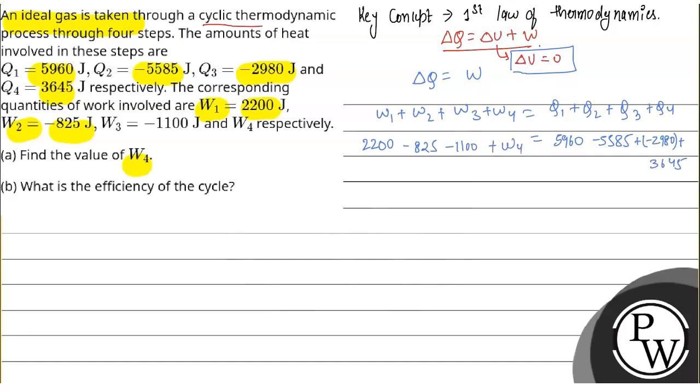From here what we will get: W4 is equal to this will be 1040 and this will be 275.